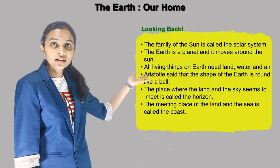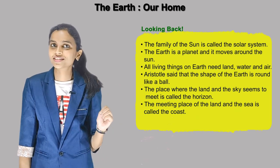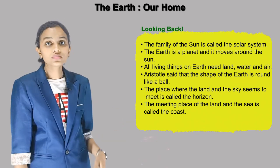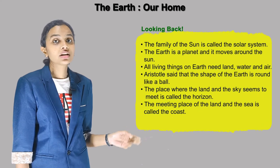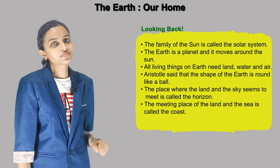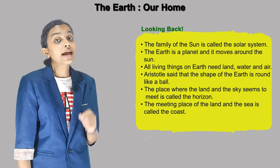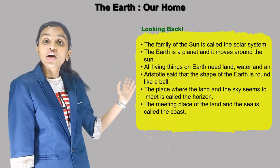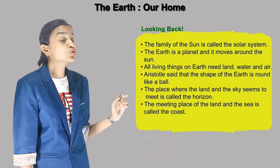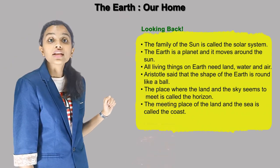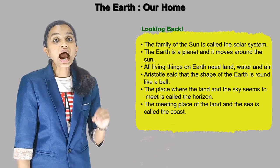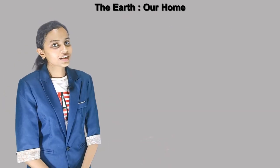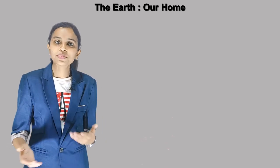Looking back: the family of the sun is called the solar system. The earth is a planet that moves around the sun. All living things on earth need land, water and air. Aristotle said the shape of the earth is round like a ball. The place where land and sky seem to meet is called the horizon, and the meeting place of land and sea is called the coast. Thank you children, we meet in the next chapter. Bye.